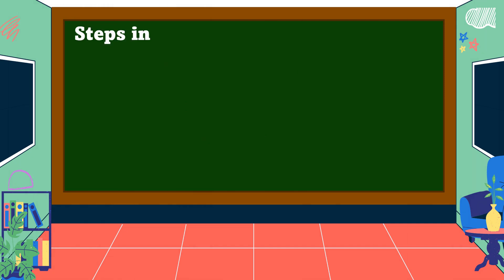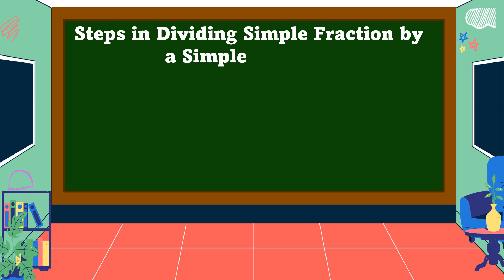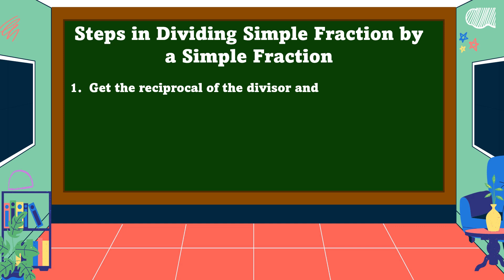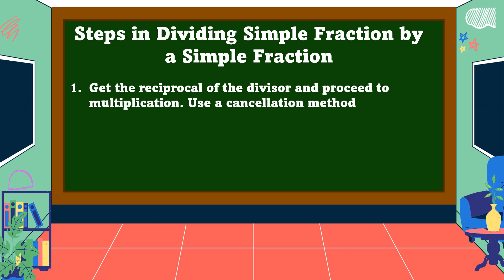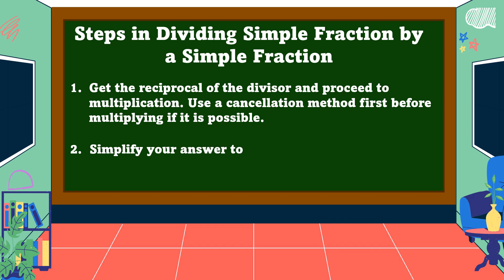These are the steps in dividing a simple fraction by a simple fraction. Number 1: Get the reciprocal of the divisor and proceed to multiplication. Use a cancellation method first before multiplying if it is possible. Number 2: Simplify your answer to its lowest term whenever possible.